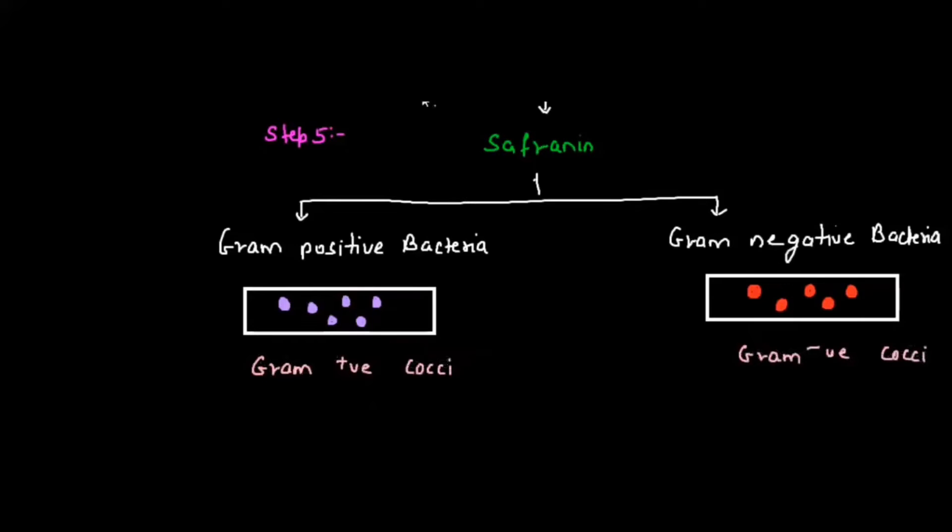The bacteria that takes the primary stain is Gram positive and the one that takes the secondary stain is Gram negative. Here you can see Gram positive cocci and Gram negative cocci. The color is going to decide whether the bacteria is positive or negative.